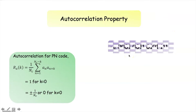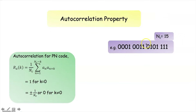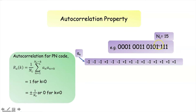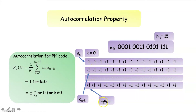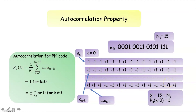Let us consider this example. Here N_c is equal to 15, meaning the code duration is equal to 15 bits. We represent 0 by negative 1 and 1 by positive 1 to get our sequence a_n. The shifted sequence is represented by a_{n+k}. Here k is equal to 0, meaning no shift. If we take the product of a_n with a_{n+k}, then for each bit position (e.g., minus 1 times minus 1 gives plus 1), and taking the sum we get 15, which equals N_c. Thus the autocorrelation value when k is equal to 0 is 1.